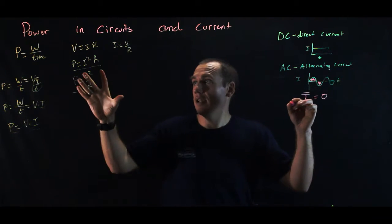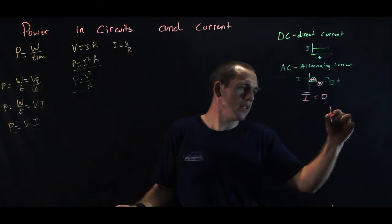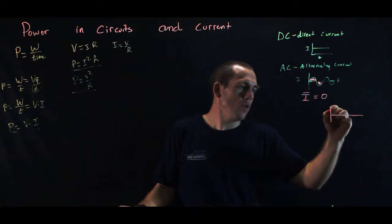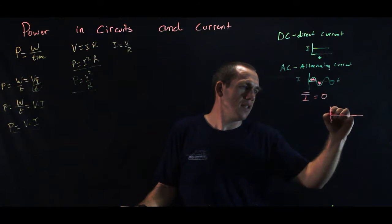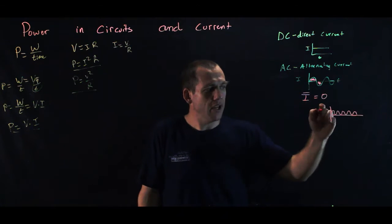Now, since this current is alternating, but power is actually I squared, what we end up with is that this oscillation happens twice as fast, and it's all positive. So we end up with I squared.